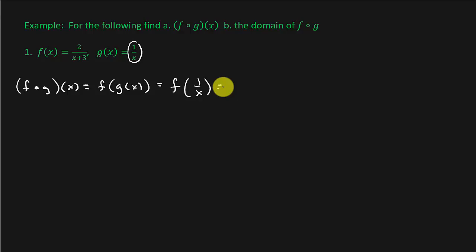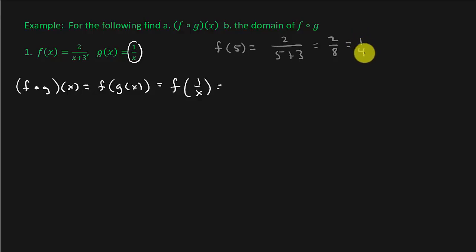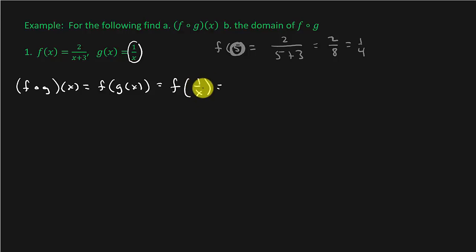Let's come over here to the side. Forget about this problem for right now. What if they wanted us to find f of five? Well, we would take the five and put it in the place of x, so that would be five plus three, which would be two over eight, which is one fourth. So basically, this term inside the parentheses gets put in the place of x. So that's exactly what we're doing here — we're going to take this one over x and plug it in to that x.